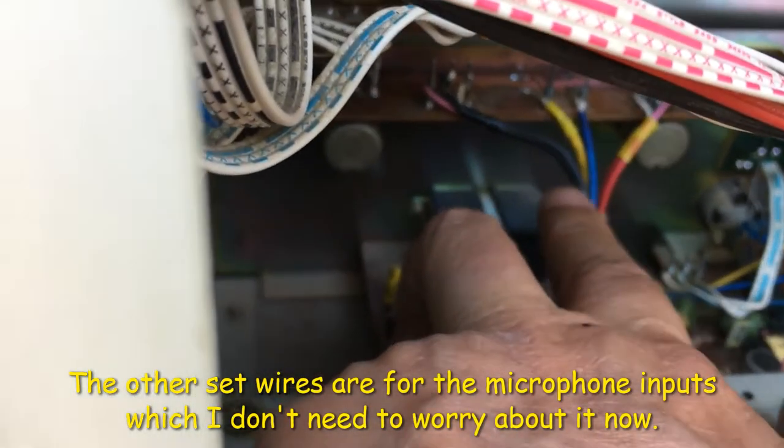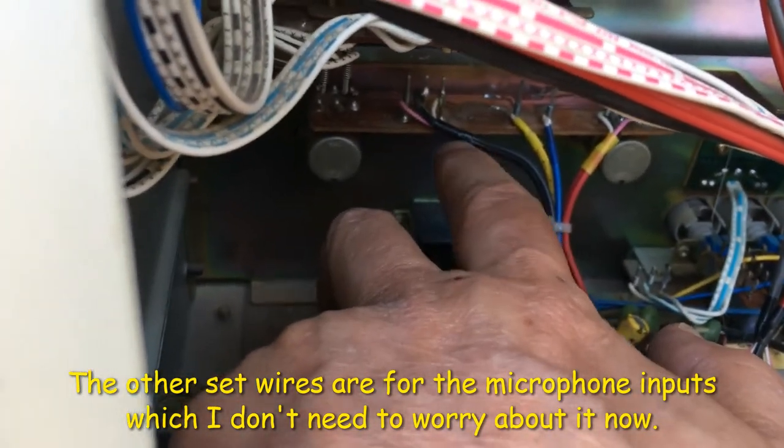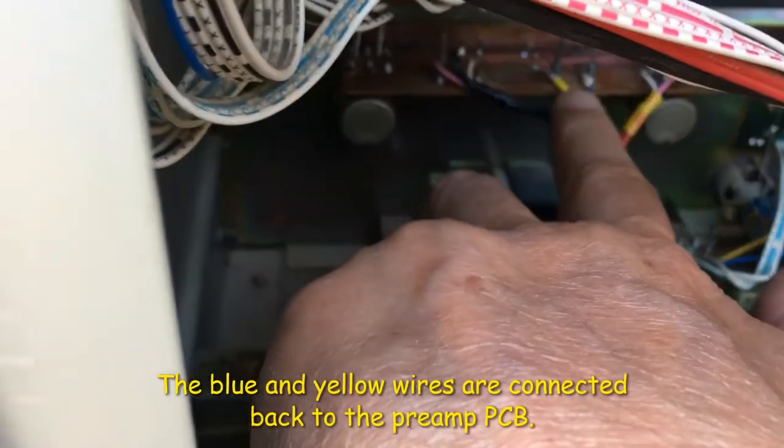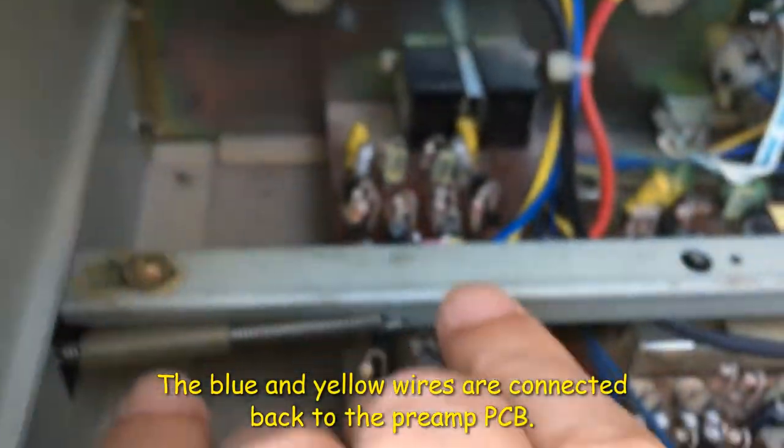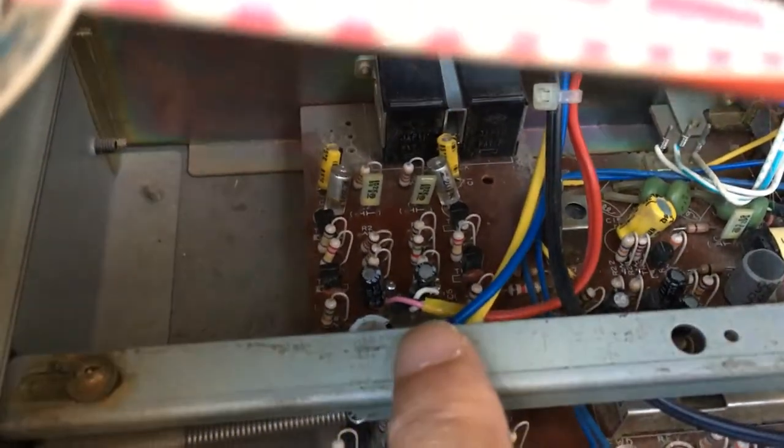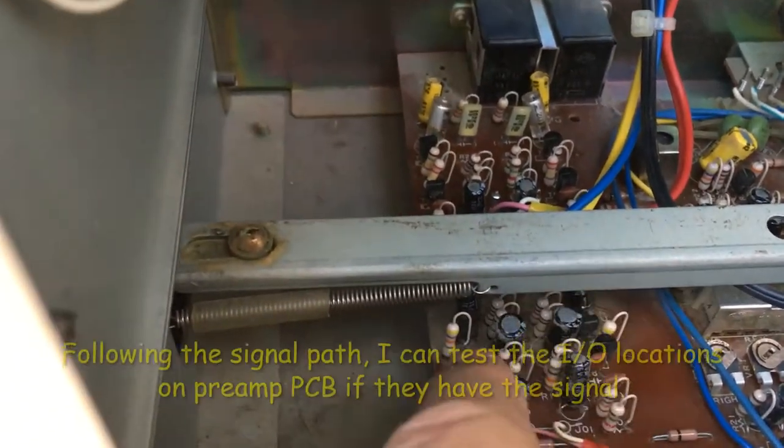But right now we're going to check the signal input line in here. So all this output from the orange control goes back to the PCB board. And this is the preamp section here, up to the signal amplifier.